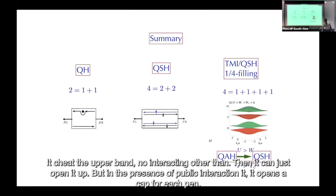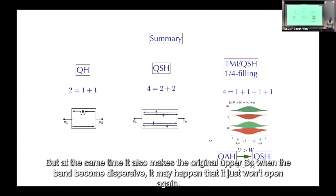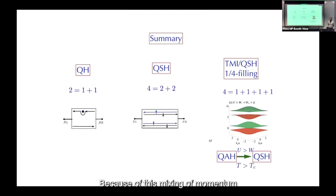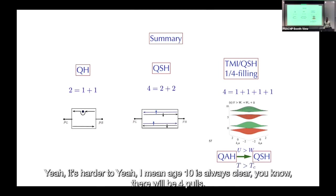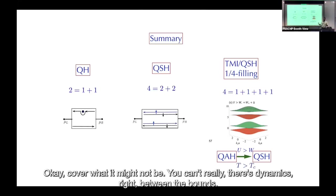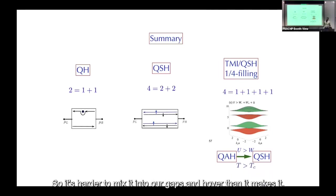For HK, because of its simple form, the upper and lower non-interacting bands separate cleanly so you can open the gap. With Hubbard interaction it opens the gap for each band but also mixes the original upper and lower non-interacting bands. When the band becomes dispersive, the mixing of momenta may prevent the gap from opening — it's harder to make statements about gaps in Hubbard than in HK.